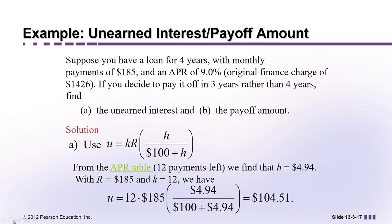To clarify how K = 12: the original loan was 48 months (4 years) and we paid it off in 36 months (3 years), so K = 48 − 36 = 12.